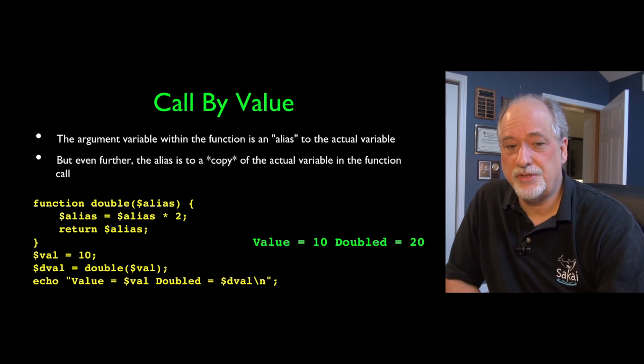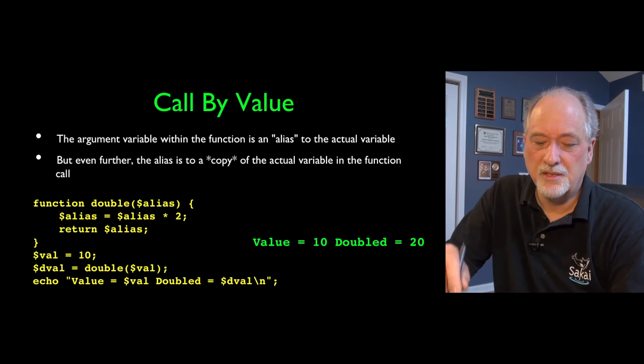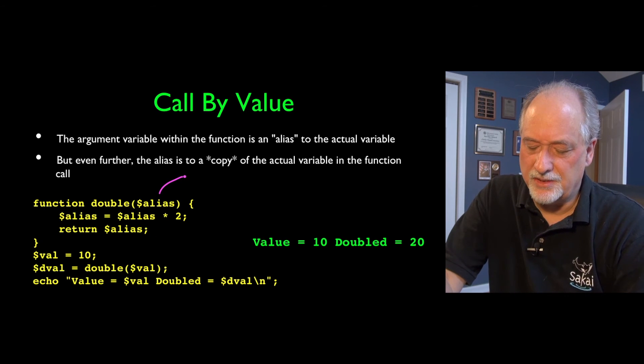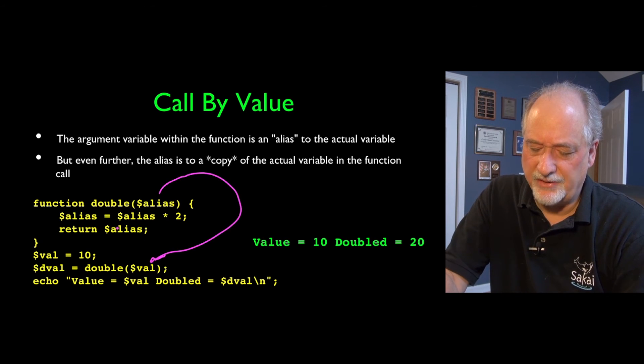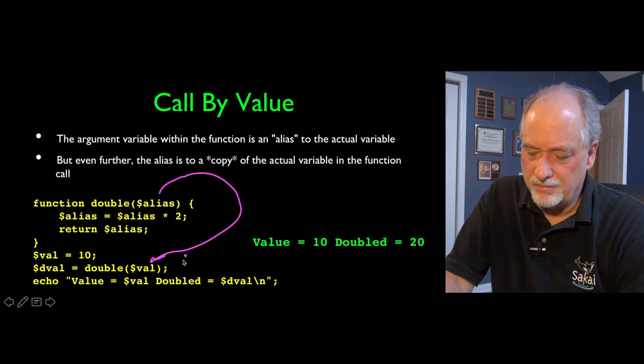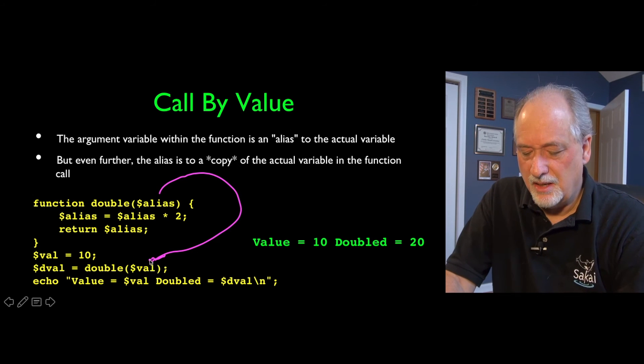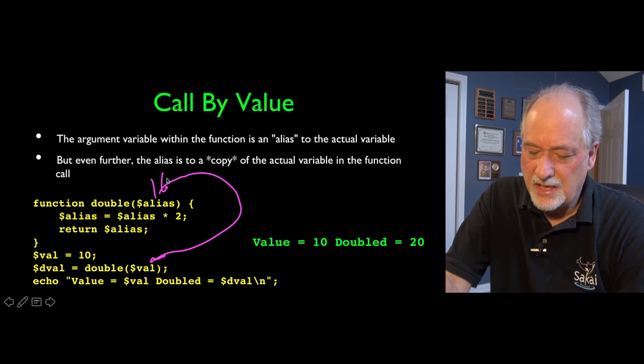Normally, in most languages, we do what's called call by value. And that is that because this variable is an alias to the call. In this case, val is a variable in the outer scope is 10. We get to see the 10, the 10 comes in, but it is that we don't remain connected to the val.